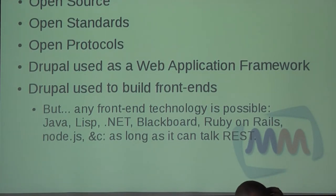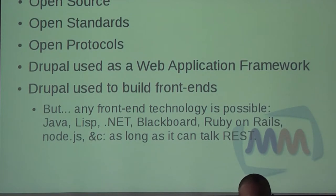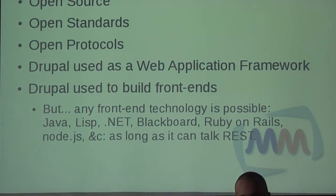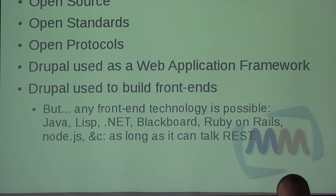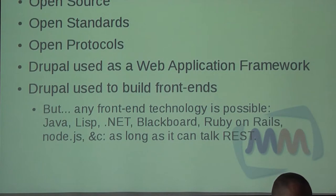Some architectural principles: we are fully open source — everything we write, everything we use is open source. This is one of the principal guidelines for the system. We use open standards as much as possible. We are now working on using standardized protocols in the inner system as well, such as the METS protocol for internal storage. We use Drupal as a web application framework, and most of the time we also use Drupal to build frontends, but it's not necessary at all.